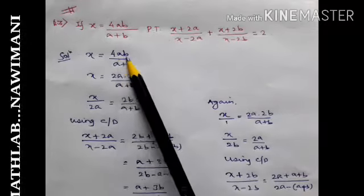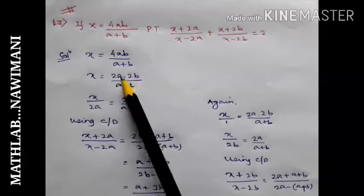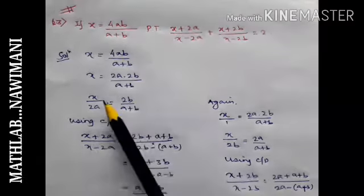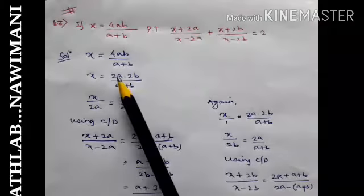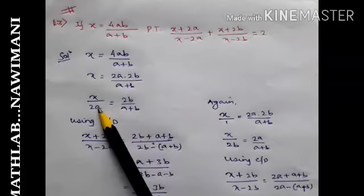Now what I will do in this question: I will break 4ab into 2a into 2b. I can do that, 2a into 2b is 4ab. Then what is here in the first? 2a. Then what I will do, I will bring this 2a down and 2b I will keep it out there.